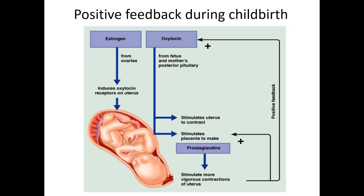The childbirth process is mediated by a positive feedback mechanism of hormonal control. At the end of trimester 3, the baby is fully grown and stretches the wall of the uterus. This stress induces a rise in estrogen levels. High estrogen concentration increases the number of oxytocin receptors on the uterus. When the fetus head presses against the cervix, it stimulates the pituitary gland to produce oxytocin. Oxytocin stimulates the uterus to contract, initiating the birthing process. Oxytocin also stimulates the release of prostaglandins by the placenta, which triggers further uterine contraction. Contractions stop when childbirth is complete and the baby is delivered.